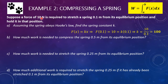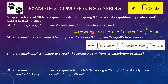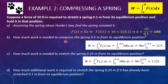For part A, since we're given the force as 10 newtons and the distance x equals 0.1, we calculate 10 equals k times 0.1, so k equals 100. For part B, we set up the integral from 0 to negative 0.5 — notice we're compressing the spring, so that's an important feature — of 100x dx, and we evaluate that to get 12.5 joules.